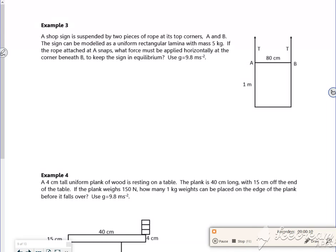So it says, a shop sign is suspended by two pieces of ropes at the corners A and B. The sign is modelled as a uniform rectangular lamina with a mass of 5 kilos. So what that means is that that mass acts at the centre of the lamina.